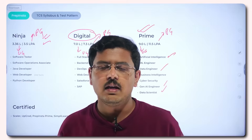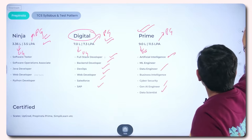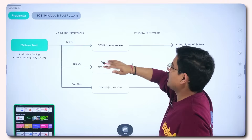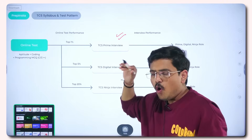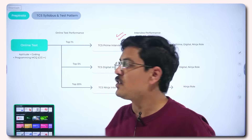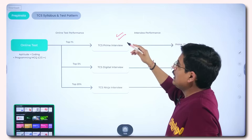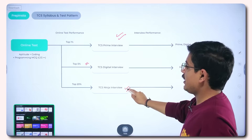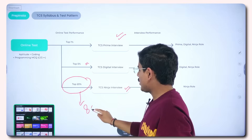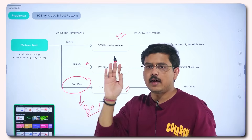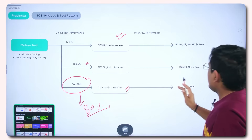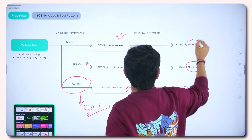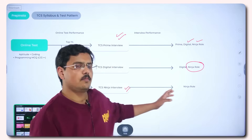Here is the basic flow: you give the NQT online test. The top 1% — where all test cases are passed and your aptitude is robust — will get the TCS Prime interview. The top 5% generally get the TCS Digital interview, and the top 20% get the TCS Ninja interview. So 80% of people are eliminated at the test stage. If you don't perform well in the Prime interview you may drop to Digital or Ninja, but if you don't perform well in Ninja you're simply out.